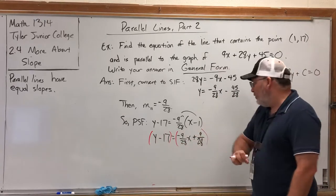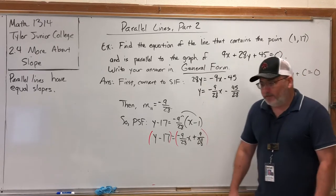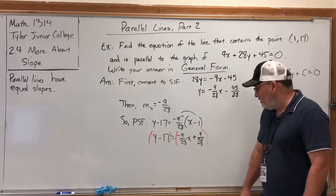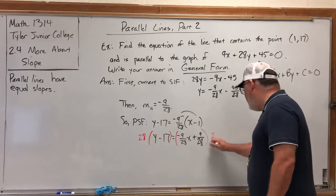But I think now is a good time to get rid of the fractions. Remember, you can get rid of fractions by multiplying both sides of the equation by the least common denominator. Actually, it can be any common denominator; it doesn't have to be the least. In this case, the only denominator is 28. So let's multiply everything by 28.